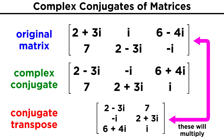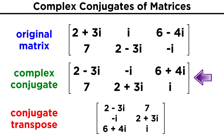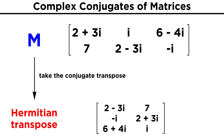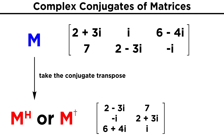For example, our two by three matrix cannot be multiplied by its two by three conjugate because of the way matrix multiplication works. But if we take the transpose of the conjugate, we will get a three by two matrix, and now we can multiply them with no problem. We've already seen that the conjugate was two minus three I, negative I, six plus four I, seven, two plus three I, I. So taking the transpose, we get the conjugate transpose: two minus three I, seven, negative I, two plus three I, six plus four I, I. This is our conjugate transpose, also referred to as the Hermitian transpose. Given a matrix M, the notation for taking the conjugate transpose is M superscript H, or in some fields, M dagger.